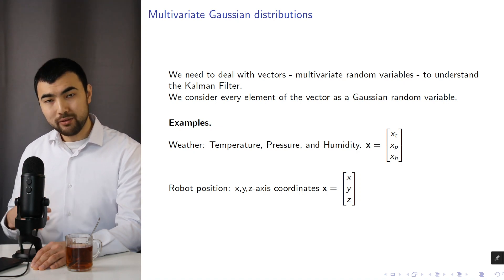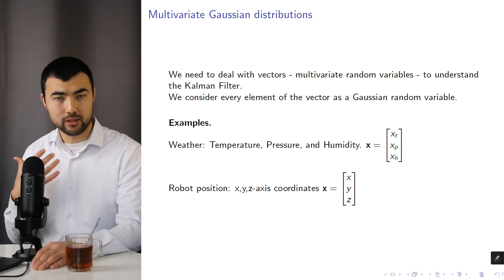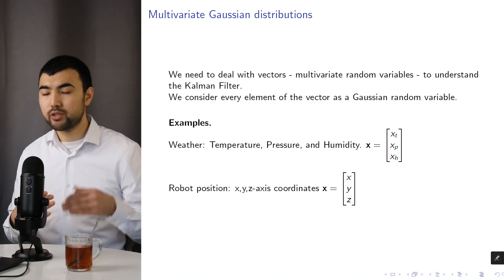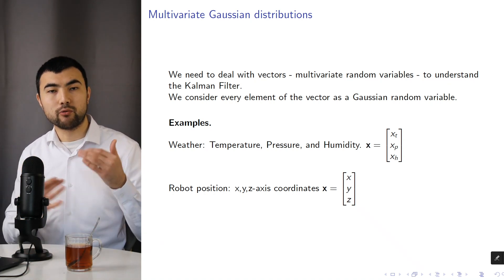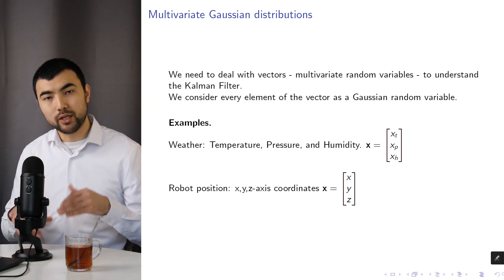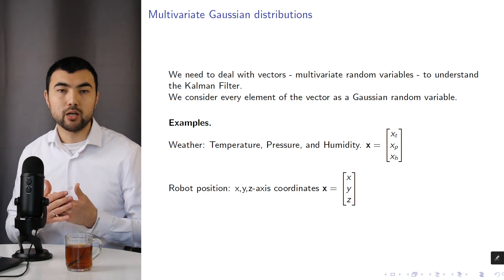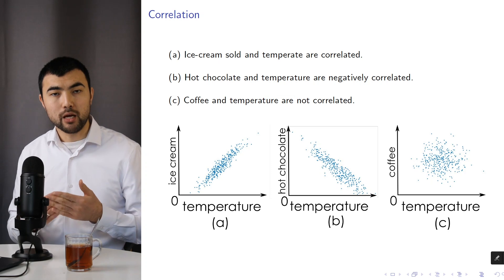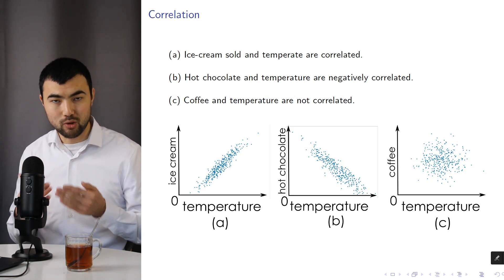However, just defining the elements as Gaussian random variables is not enough, because we also have to define the relation between each pair of elements when we work with multivariate random variables. And to do that, we have to understand the correlation concept.